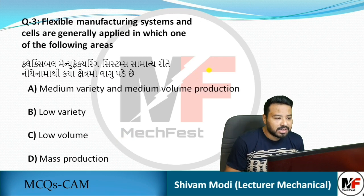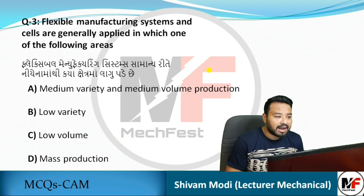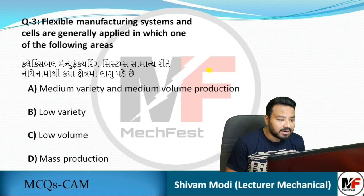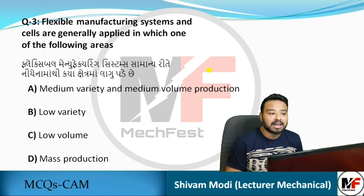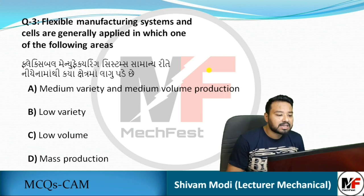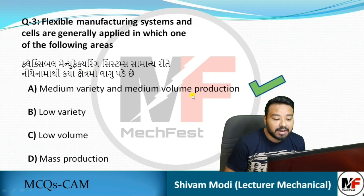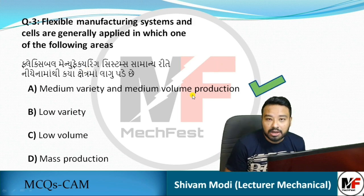Next question: flexible manufacturing systems and cells are generally applied in which area? The answer is medium variety and medium volume production.